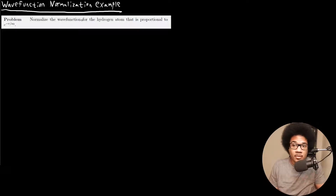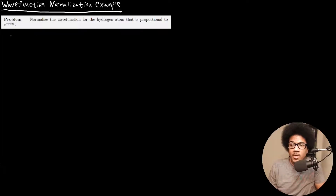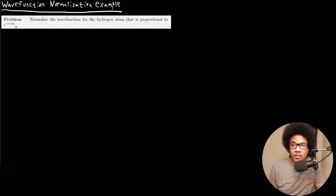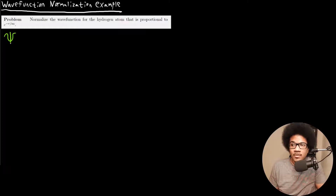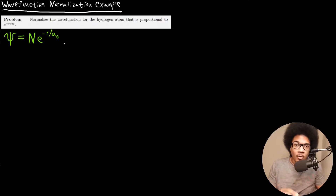The problem says: normalize the wave function for the hydrogen atom that is proportional to e to the negative r over a-naught. So we have this wave function — it's a valid solution to Schrödinger's equation for the hydrogen atom, but it's unnormalized. The normalized wave function psi would be equal to some normalization factor N times e to the negative r over a-naught. Our goal is to figure out this normalization factor.